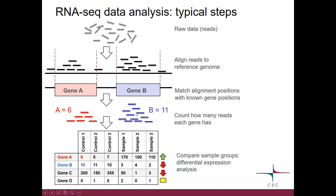We do this for all the samples and then combine the results into a table. Here I have my samples — six samples from two different groups — and then all the genes with the number of reads that map to each gene in each sample. In order to find differentially expressed genes, we compare the values in one group to the values in the other group, and then we can say that gene A seems to be upregulated in this group. This is of course a simplification, but it gives you the idea of what we are doing.